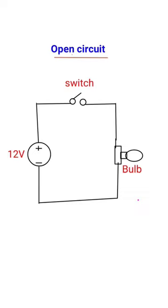For example, consider one circuit we use in daily life — a battery and bulb connected with a switch. When the switch is in the off state, the switch is open-circuited.